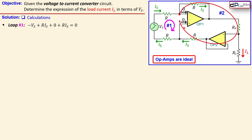We can also make a second loop. Starting at this node and completing the full loop: since the op-amp input current is zero, the current through the feedback resistor Rf is the same as IS. The equation becomes: R times IS, plus R times IS (current flowing from plus to minus), plus IL times Rf. Then, because negative feedback makes the two op-amp input potentials equal, we traverse that node and add another R times IS, returning to zero potential difference.